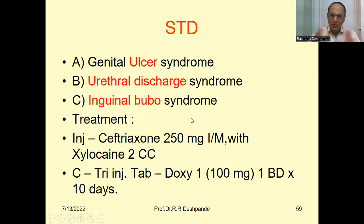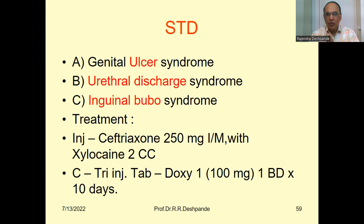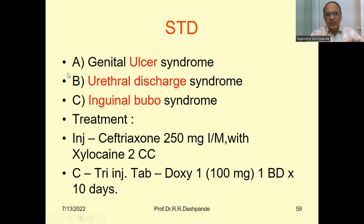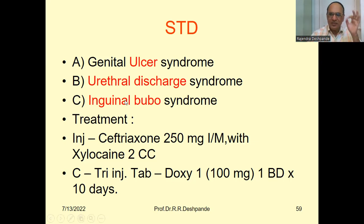All diseases — whether syphilis, gonorrhea, chancroid, LGV, or granuloma inguinale — are categorized into three syndromes: genital ulcer syndrome, urethral discharge syndrome, and inguinal bubo syndrome. Nowadays in allopathic thinking, any of these categories — whether ulcer, urethral discharge, or inguinal bubo — can be treated with the same medicines. This is the best medicine for all types of STDs. Don't forget this very important slide.